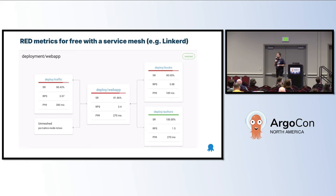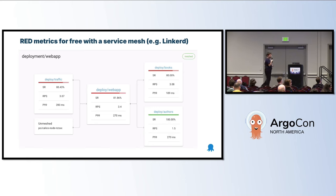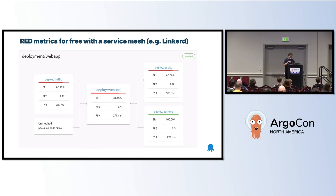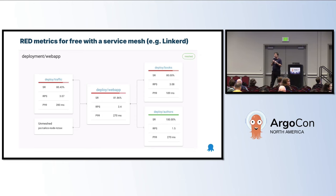If you have these metrics already, that's great. If you don't, you can cheat. Here is an example from Linkerd, which is a service mesh. If you install Linkerd in your cluster, you automatically get all these metrics from all your applications. SR means success rate — the rate of errors. RPS is requests per second — the rate. P99 is the duration. There are ways to get these metrics for free, even if your developers don't have the time or capability to implement them.